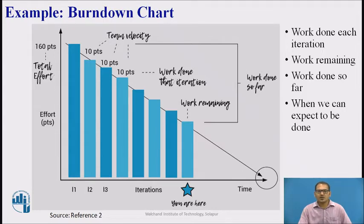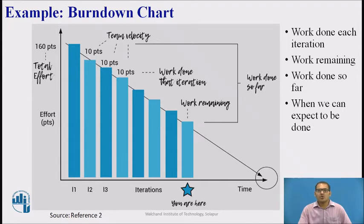This graph also provides the following information: work completed during each iteration, work still needed to be done, and the timeframe when the team expects the project to complete. While this chart is very clear and easy to follow, it is not necessarily realistic. A true Burndown Chart will not have straight lines because the team will never complete their tasks at the same speed or in the same timeframe.